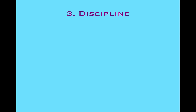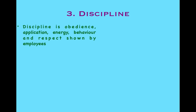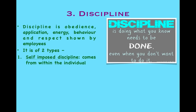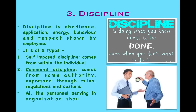The third principle is Discipline — it is obedience, application, energy, behavior, and respect shown by the employees. It is of two types: self-imposed discipline, which comes from within the individual, as the saying goes — 'Discipline is doing what you know needs to be done, even when you don't want to do it.' The second type is command discipline, which comes from authority expressed through rules, regulations, and customs. All personnel serving in the organization should be disciplined according to this principle.